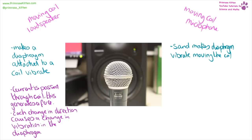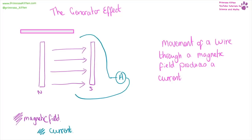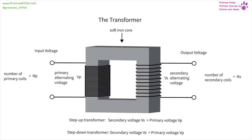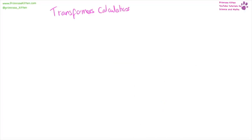Sound causes the diaphragm to vibrate, which moves the coil backwards and forwards past the magnet, generating a current — the generator effect, an extension of Fleming's left-hand rule. In a transformer, we have a soft iron core with wire coiled around it with different numbers of coils on each side. A step-up transformer has a secondary voltage greater than the primary voltage. A step-down transformer has a secondary voltage less than the primary voltage. For transformer calculations: voltage in the primary coil divided by voltage in the secondary coil equals the number of turns in the primary coil divided by the number of turns in the secondary coil. Voltage is in volts; number of turns has no unit.